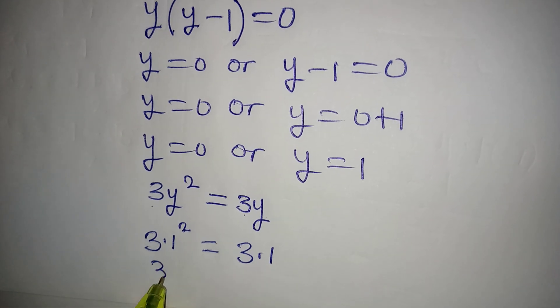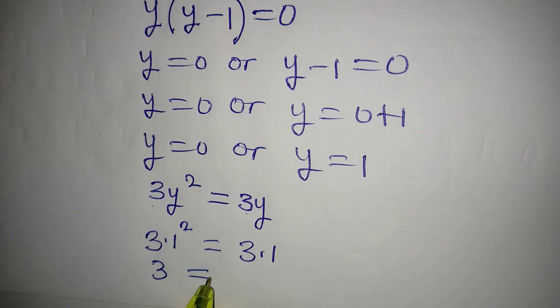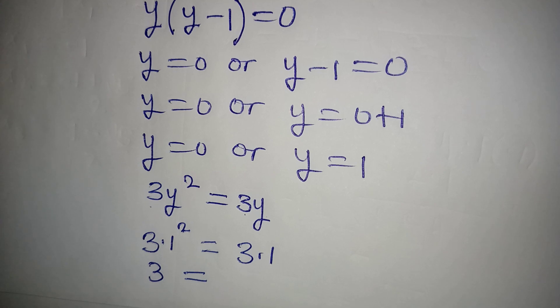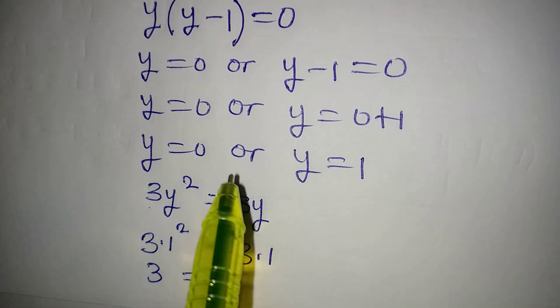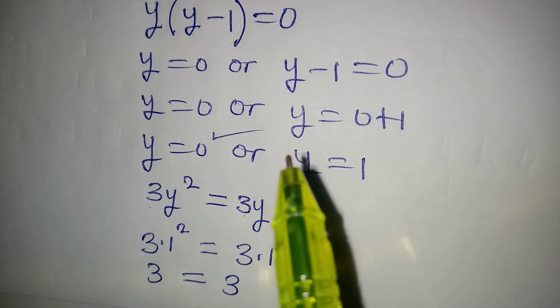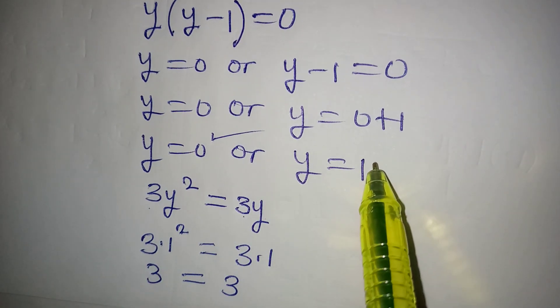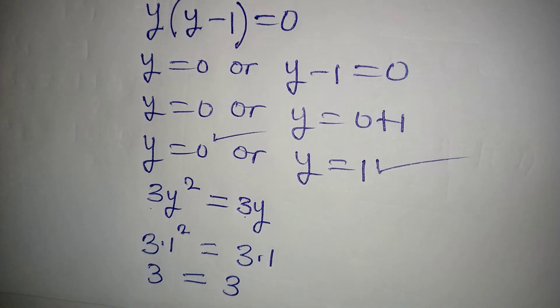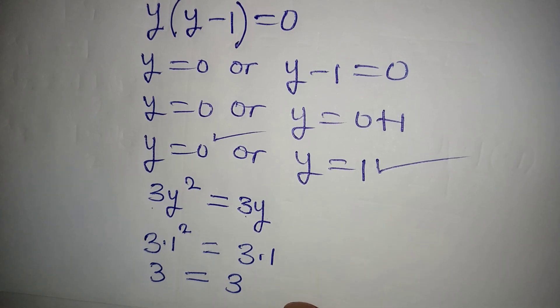Because 1 squared is 1, 3 times 1 is 3, and then on the other side, 3 times 1 is still 3. So this is to say that these two values of y are satisfying the equation. Thank you for watching.